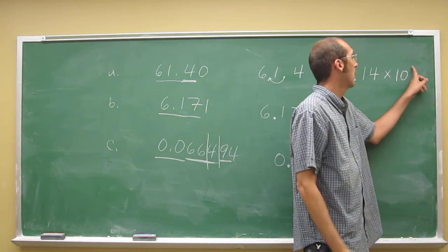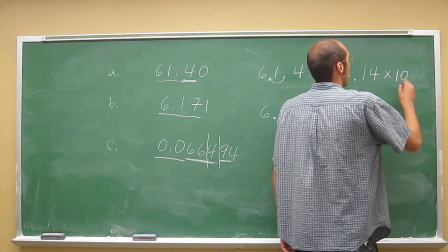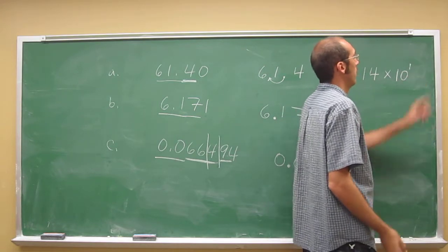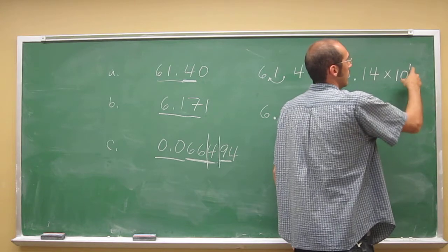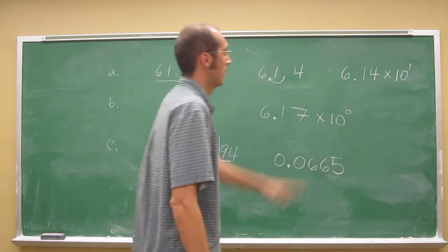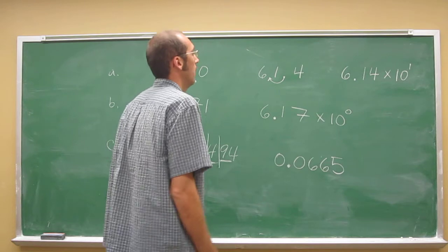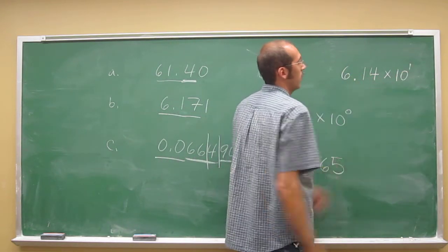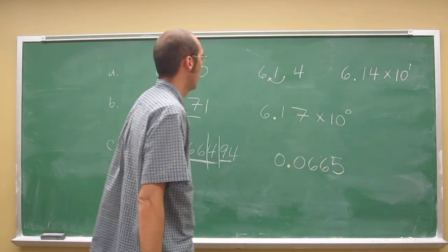But in scientific notation, we always put the exponent. And the exponent 1 just says whatever this is stays the same. Okay, so 6.14 times 10 to the 1 is 6.14 times 10, which is 61.4.